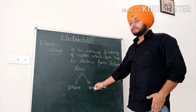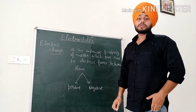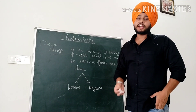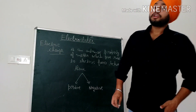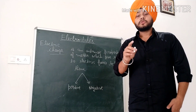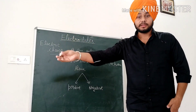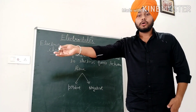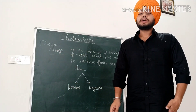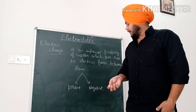Electric charge is of two types: positive and negative. A body that loses electrons acquires a positive charge, while a body that gains electrons acquires a negative charge. The electron transfers give the body its charge.